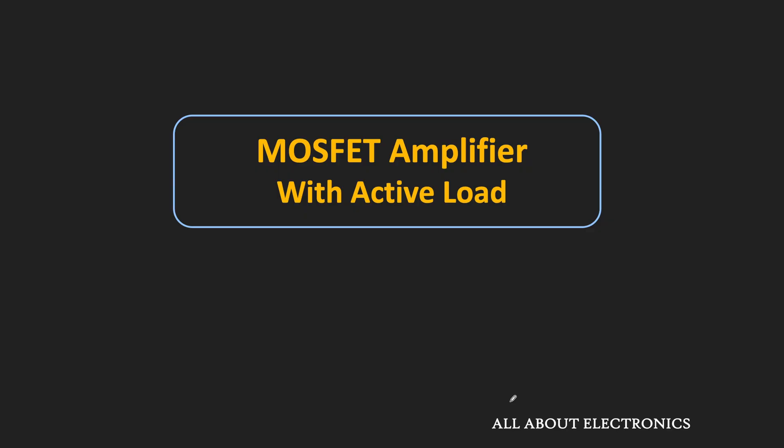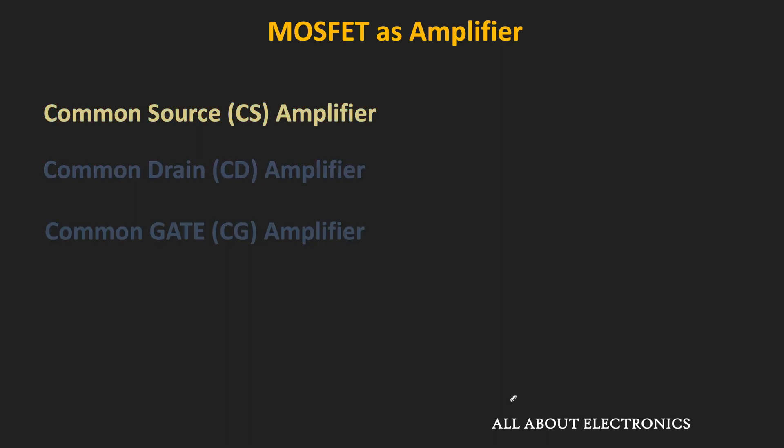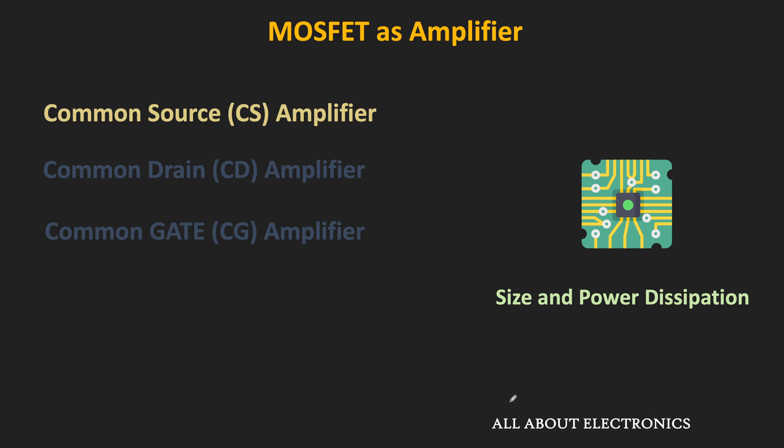Hey friends, welcome to the YouTube channel all about electronics. In this video we will learn how the MOSFET can be used as an amplifier with the active load. First of all we will understand what is active load and why it is commonly used in the amplifier circuit. During our discussion we will mostly focus on the common source amplifier. This active load is commonly used in integrated circuits where size and power consumption both are major constraints.